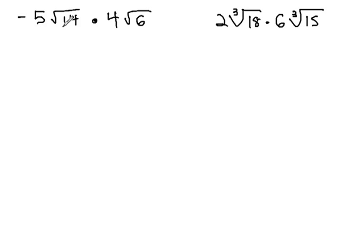So in this first example, we have negative 5 times the square root of 14, times 4 times the square root of 6. We can multiply the parts that are outside the radical, the coefficients. Negative 5 times 4 is negative 20.